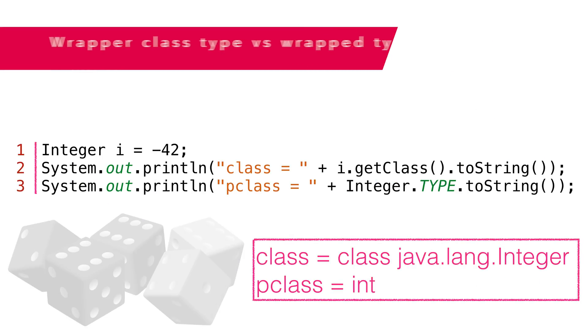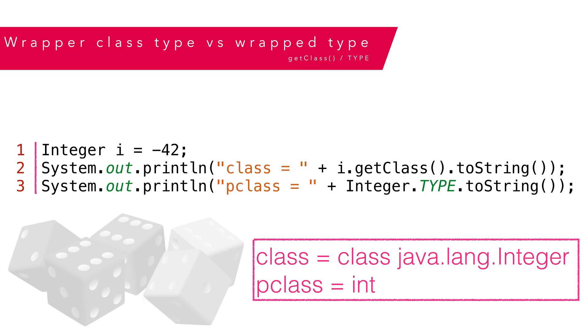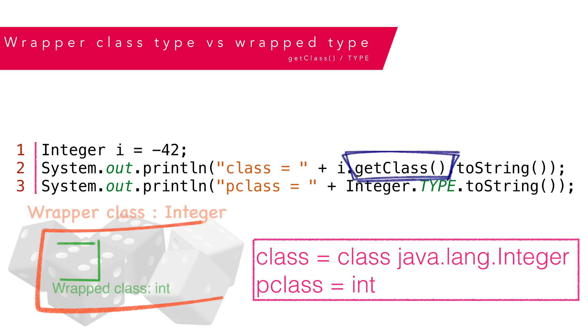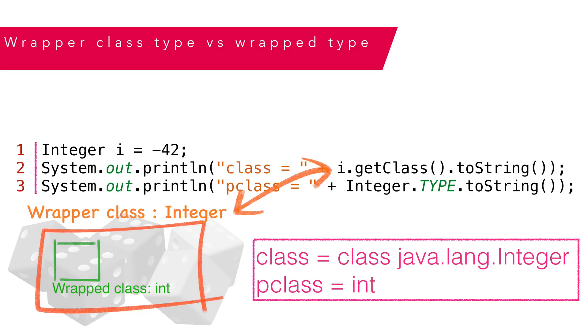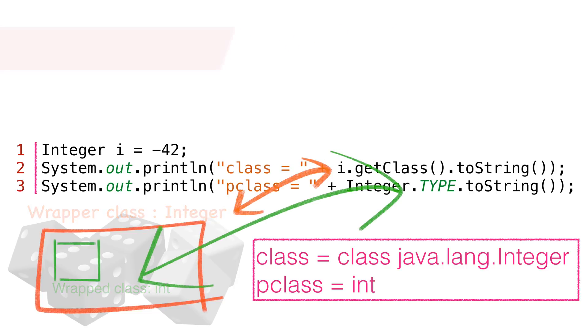The last constant is the class type, called TYPE. Class objects are meta objects, and TYPE simply returns a class describing the primitive class wrapped by the enclosing class. The Integer class also has a method called getClass(). getClass() returns a class describing the wrapper class Integer. The distinction is: getClass() returns the meta class for the wrapper class Integer, while TYPE returns the meta class for the primitive type int. If we print the class name, getClass() prints java.lang.Integer, while TYPE.toString() prints int. These distinctions become important when we get to reflection in Java. The idea is, if we ask what the class type is for a variable, the Integer class is different from the int primitive. We use TYPE constants to determine what kind of primitive a number instance is wrapping.